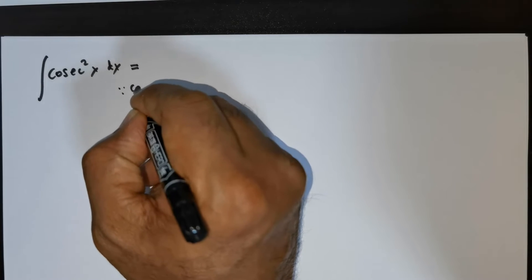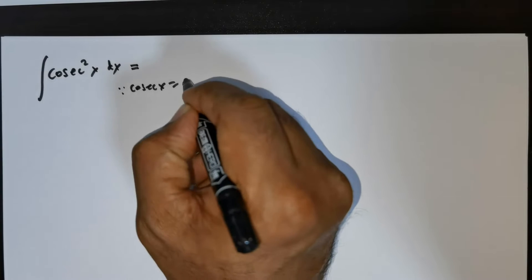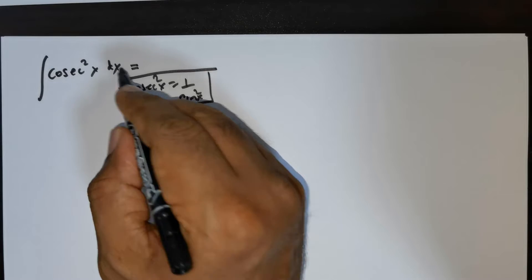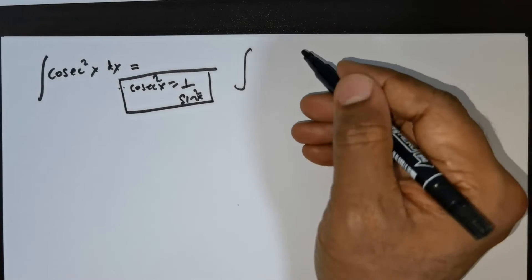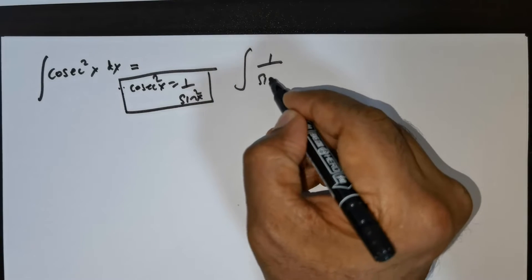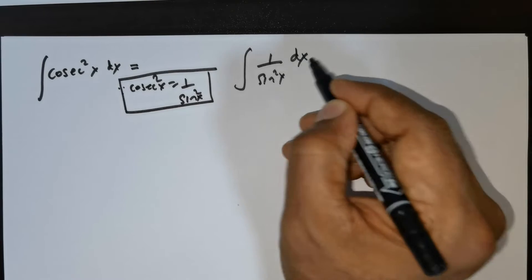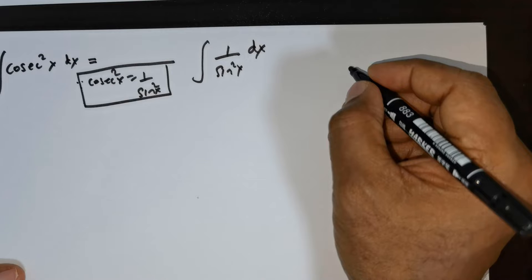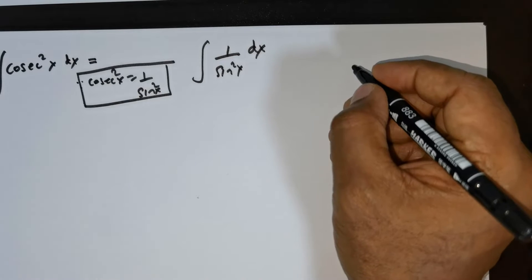Now I know that cosecant x is equal to 1 over sine x, or cosecant squared x is equal to 1 over sine squared x. Therefore this is equal to integral 1 over sine squared x times dx. Now there is a relationship that we have to know.